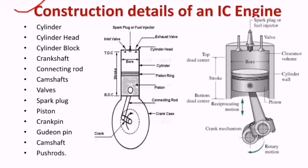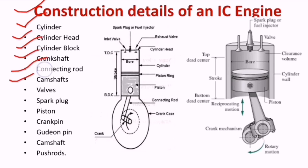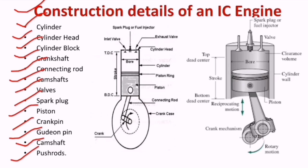Constructional details of an IC engine — what are the parts? The main important parts are: cylinder, cylinder head, cylinder block, crankshaft, connecting rod, camshaft, valves, spark plug, piston, crank pin, gudgeon pin, camshaft, push rods, and rocker arms.